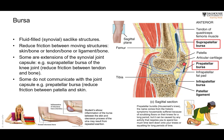The knee also has a prepatellar bursa between the patella and the skin, which does not communicate with the knee joint. This bursa gets inflamed from excessive friction during kneeling, causing a condition called housemaid's knee. Similarly, the bursa between the skin and the olecranon process of the ulna at the elbow can become inflamed — especially in students who rest on their elbows — causing a condition called student's elbow. This bursa does not communicate with the elbow joint, so inflammation remains localized.